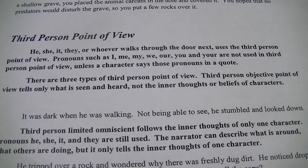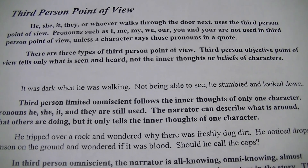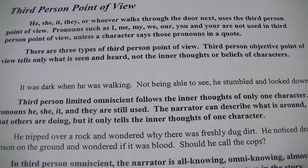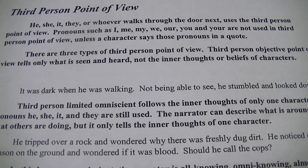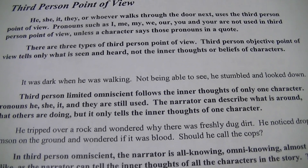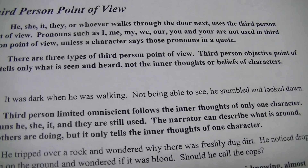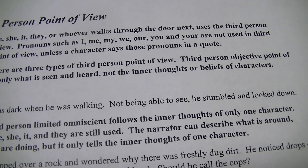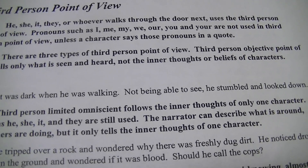There are three types of third person point of view. Third person objective tells only what is seen and heard — not the inner thoughts or beliefs of a character. If we see what somebody is thinking or feeling or believing, that is not objective. Example of objective: "It was dark when he was walking; not being able to see, he stumbled and looked down." Notice we're using he, not I, me, or you.